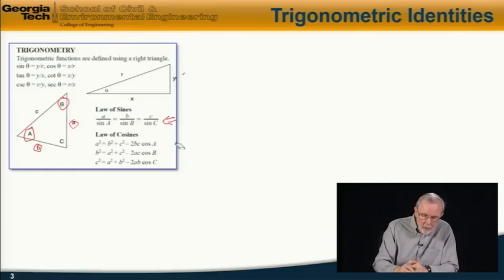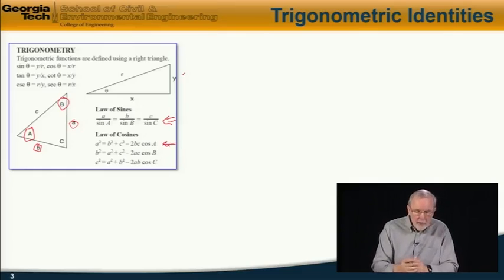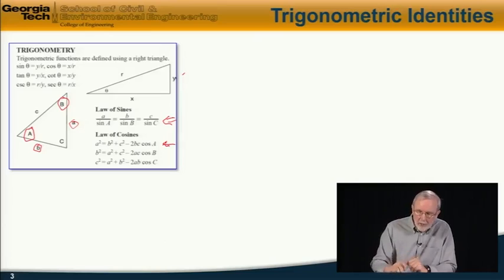Another convenient law is the law of cosines, which can be written in terms of the three different angles. a squared equals b squared plus c squared minus 2bc cosine a, and similar equations for the other two angles.